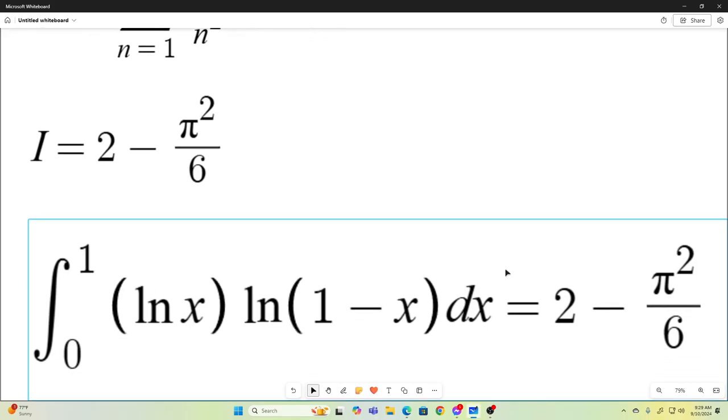So, the integral from 0 to 1 of natural log x times natural log 1 minus x dx is 2 minus pi squared over 6. All right, guys. That's it. I hope you enjoyed that. And we'll see you next time.